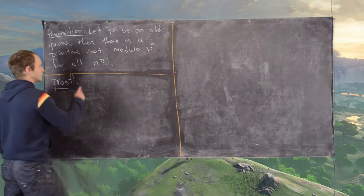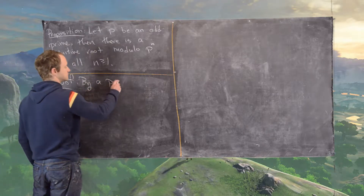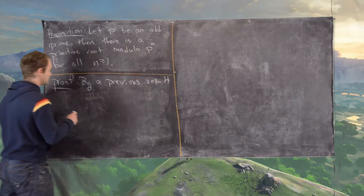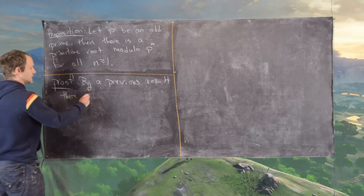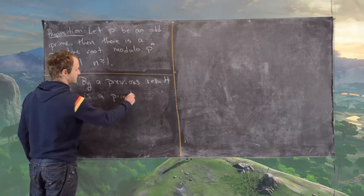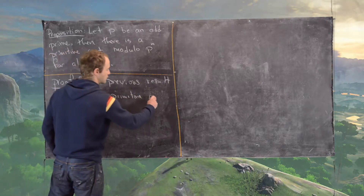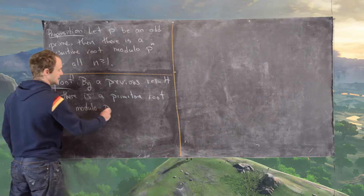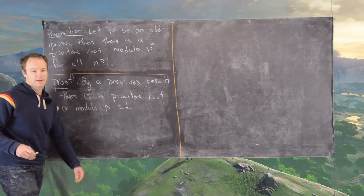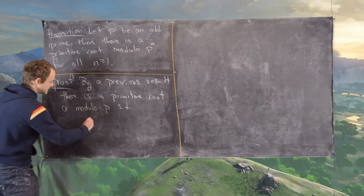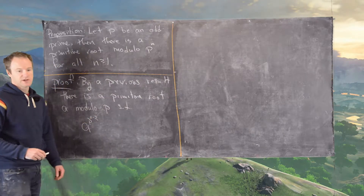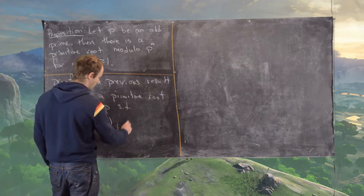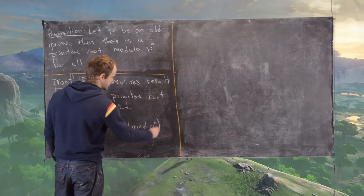Beginning the proof, we recall that by a previous result, we know there is a primitive root a modulo p such that a to the p^(n-2) times (p-1) is not congruent to 1 modulo p^n.